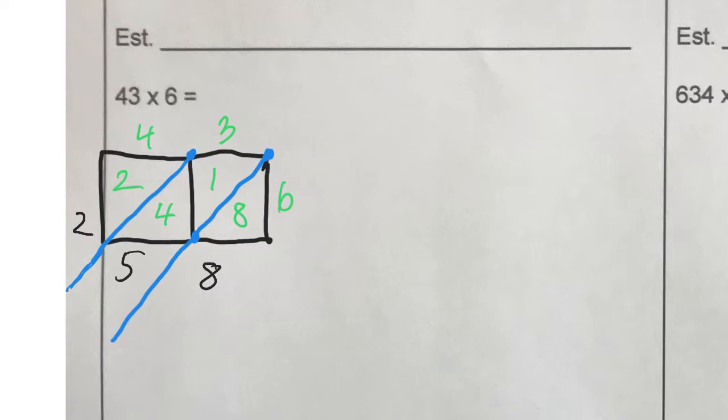the 2 comes down, 258. And you know what, we forgot to do our estimate. 40 times 6 equals 240 and that's pretty close.